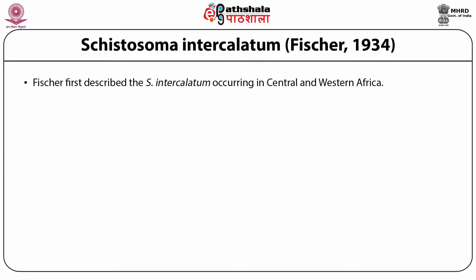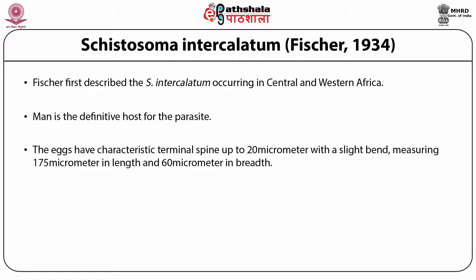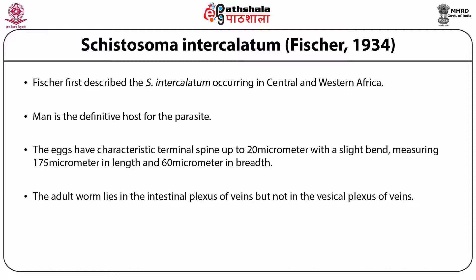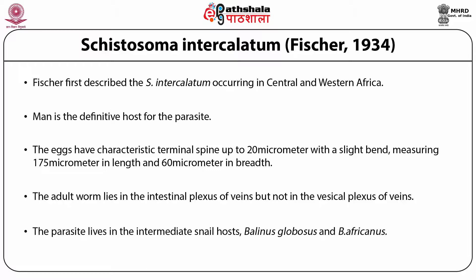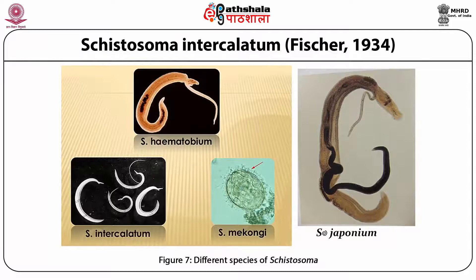Cystosoma intercalatum: Fischer first described this species occurring in Central and Western Africa. Man is the definitive host. The eggs have a characteristic terminal spine up to 20 µm, measuring 175 µm in length and 60 µm in breadth. The adult worm lies in the intestinal plexus or veins, but not in the vesicle plexus. The parasite uses intermediate snail hosts Bulinus globusus and Bulinus africanus. This figure represents different species of Cystosoma: Cystosoma haematobium, Cystosoma intercalatum, Cystosoma mekongi, and Cystosoma japonicum.